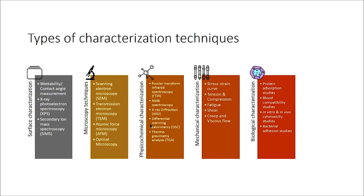X-ray photoelectron spectroscopy (XPS) calculates the elemental composition of the material — what elements and chemical bonds are present on the material surface. Secondary ion mass spectroscopy (SIMS) is also a surface technique where you can find out the surface atomic composition and how many electrons are available on the material surfaces. Microscopy techniques also come under surface characterization; the mainly used technique is scanning electron microscopy (SEM), used to observe the morphology of material surfaces, and transmission electron microscopy (TEM), which is used to see inside the material. Atomic force microscopy (AFM) checks the surface roughness of materials.